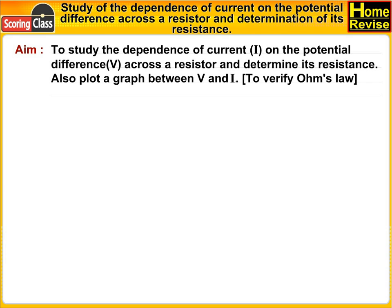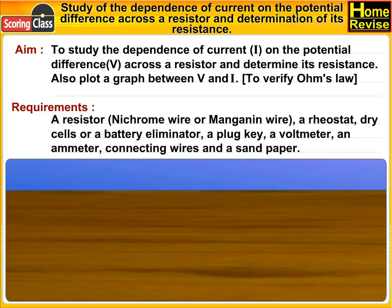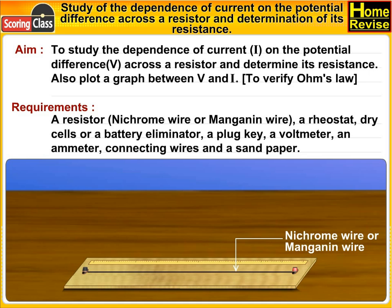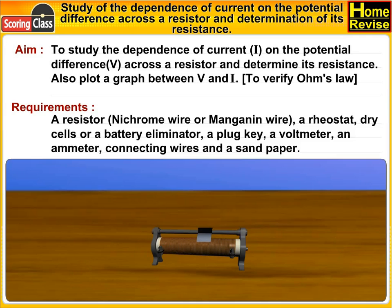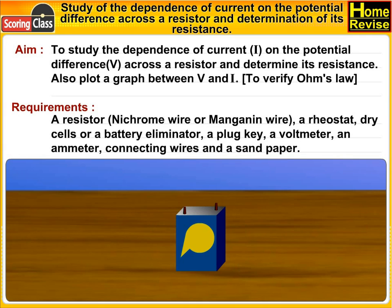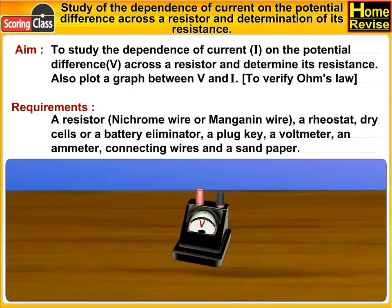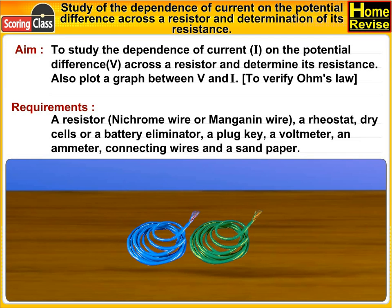Also plot a graph between V and current I to verify Ohm's law. Requirements: A resistor (Nichrome wire or Manganin wire), a rheostat, dry cells or a battery eliminator, a plug key, a voltmeter, an ammeter, connecting wires, and sandpaper.